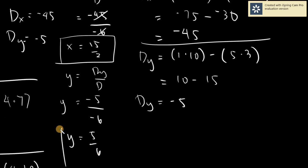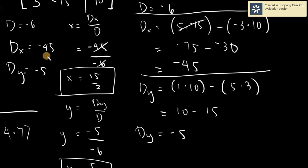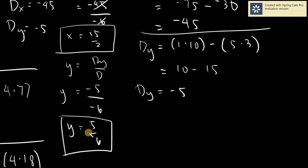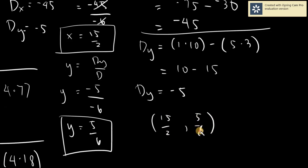You have to be careful because it's D sub y over D — there are cases you might confuse it and use D sub x instead of D. It's simply D sub x or D sub y over the main determinant D. Our solution is x equals 15 over 2 and y equals 5 over 6.